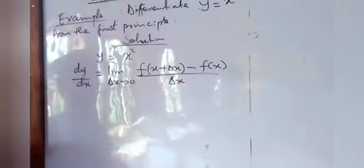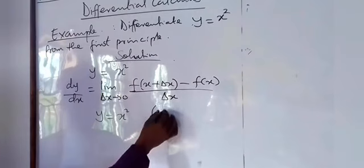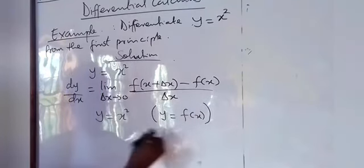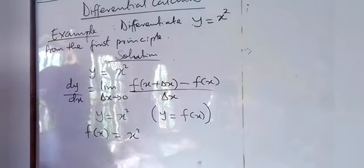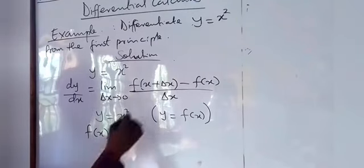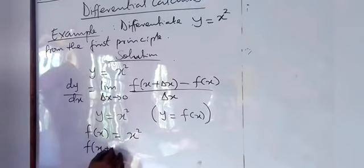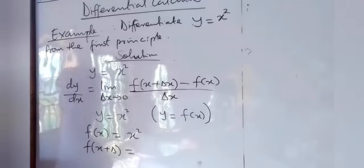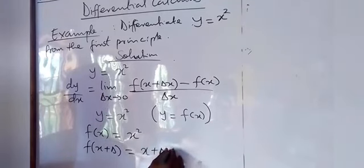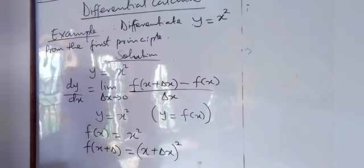So here, we want to differentiate y equals x squared. When we compare y equals x squared with y equals f(x), we can see that f(x) equals x squared. From there, we can also get f(x + δx). So f(x + δx) — we just add δx to our f(x). We add δx to x before we square, because what we have is x squared. So we add δx, then we square.